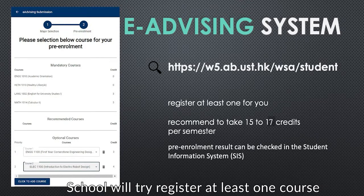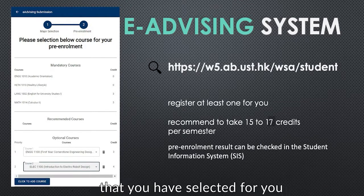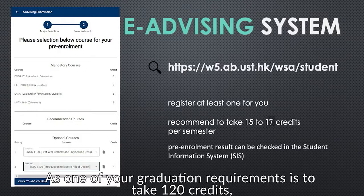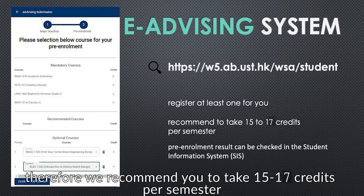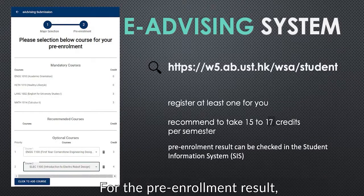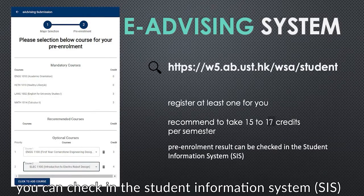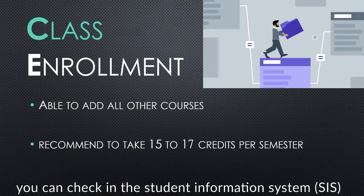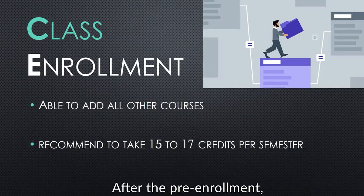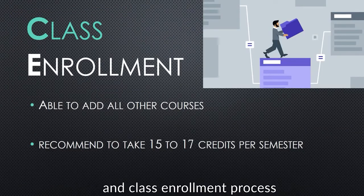Schools will try to register at least one course that you have selected for you. As one of your graduation requirements is to take 120 credits, we recommend you to take 15 to 18 credits per semester. For the pre-enrollment result, you can check in the Student Information System, or the SIS. After the pre-enrollment, you will be getting into the validation and class enrollment process.